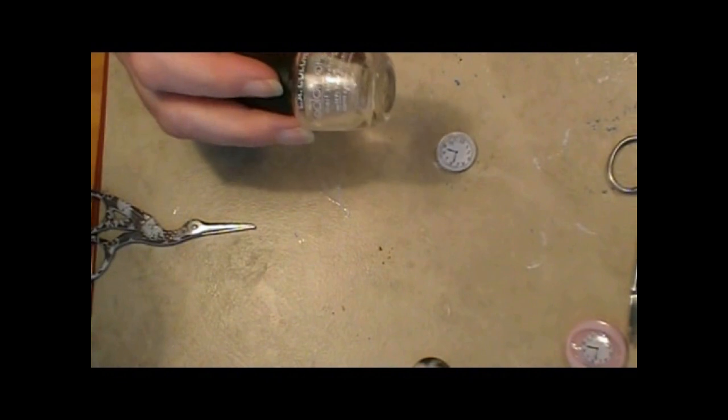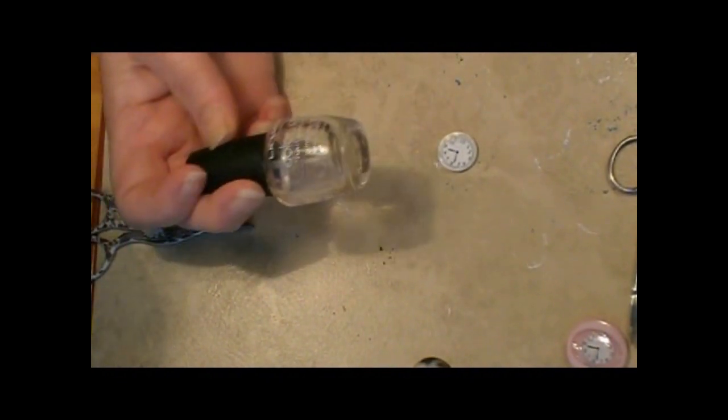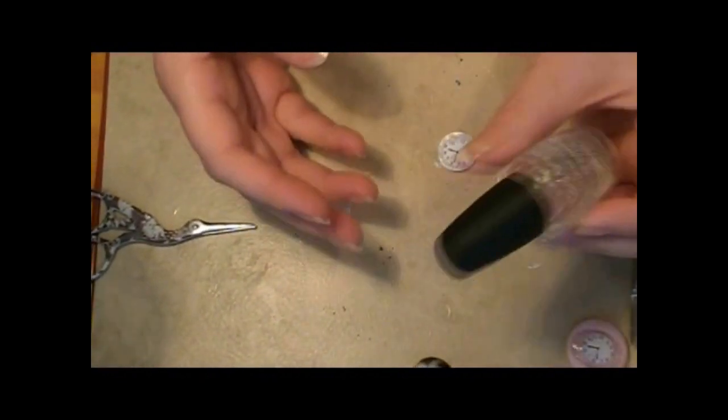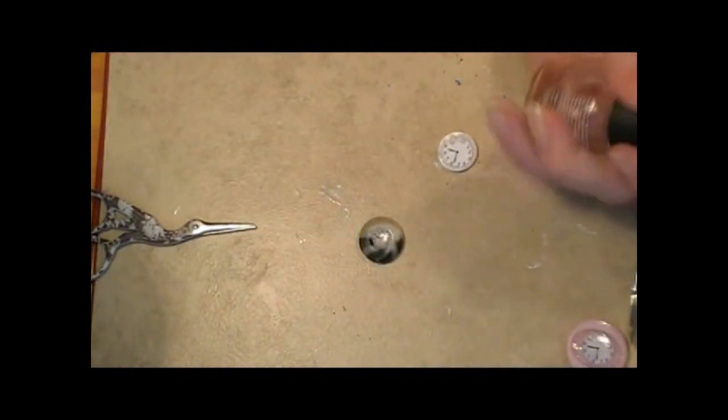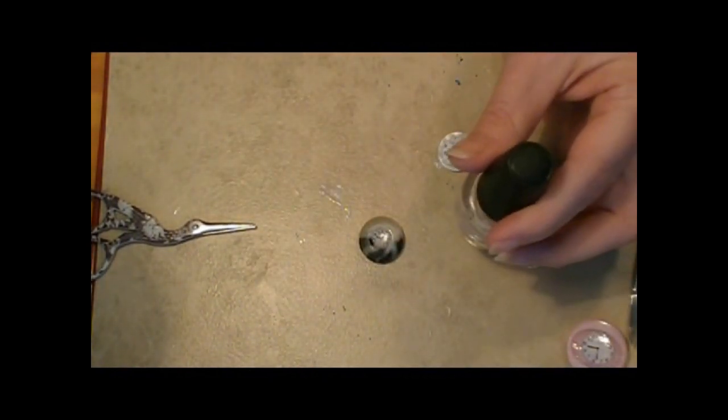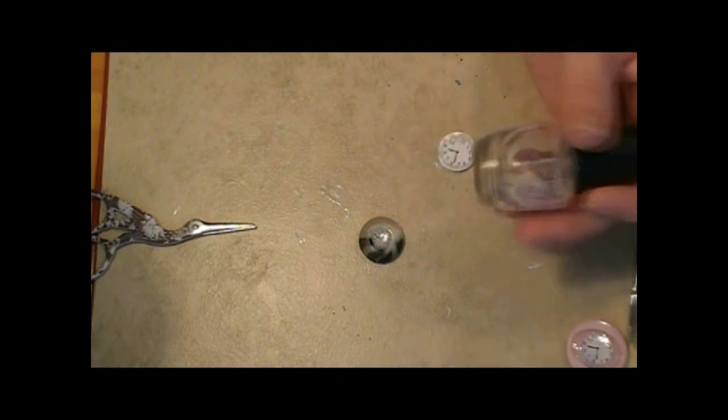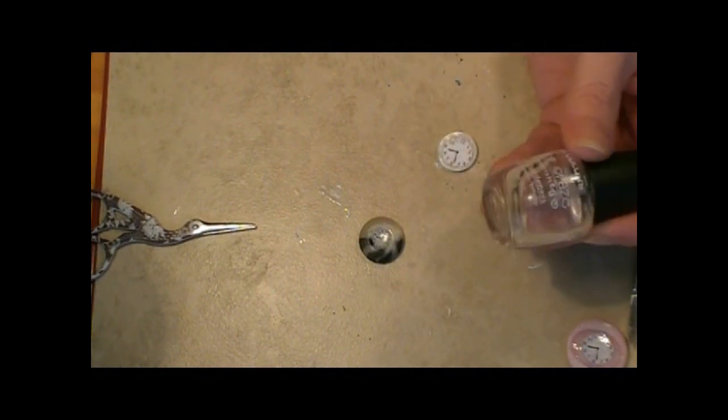Another advantage to nail polish, it's really cheap. This is a bottle from Dollar Tree, so this was a dollar for the bottle of nail polish. It gives a nice coat, but it takes many coats. But they dry in just a few seconds, a few minutes anyway. So that's an advantage there.